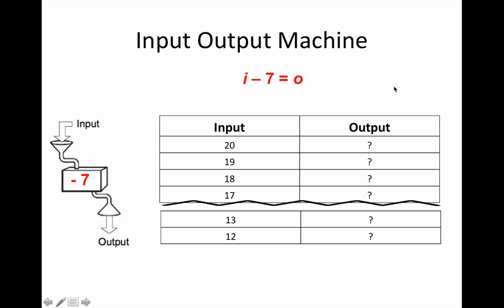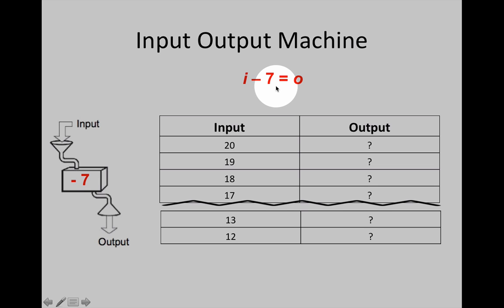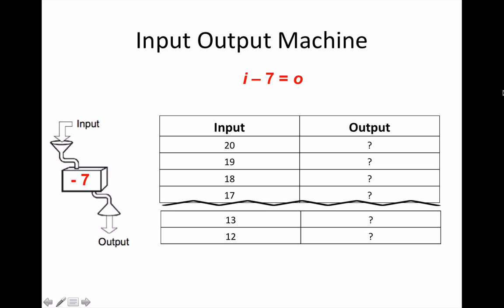Make sure you've noticed that the rule for this input output table is input take away seven equals the output. You can use that formula to complete the table. Pause the video while you do this, then continue the video to check your answers.